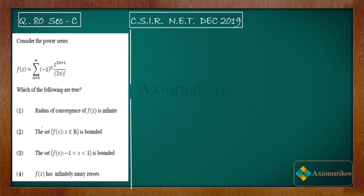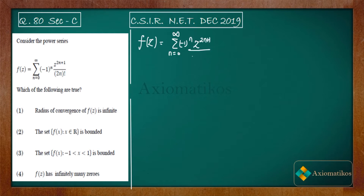The first option says the radius of convergence of f(z) is infinite. We will read the remaining options later. The question talks about the radius of convergence. So first, let us write f(z) properly: it is the summation from n = 0 to infinity of (−1)^n · z^(2n+1) over (2n)!.